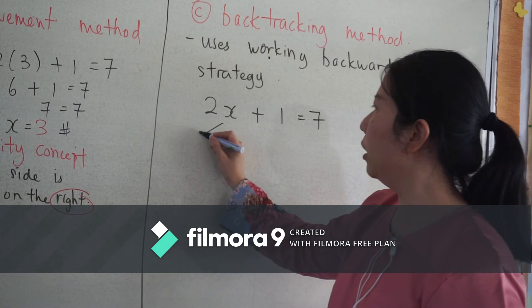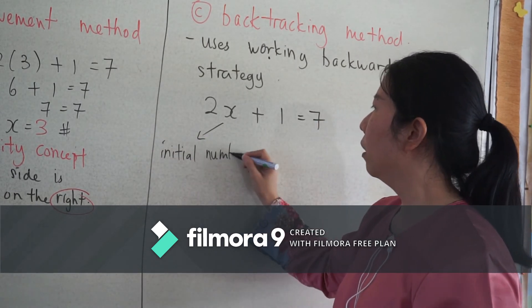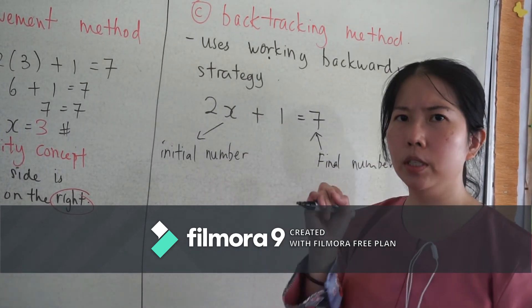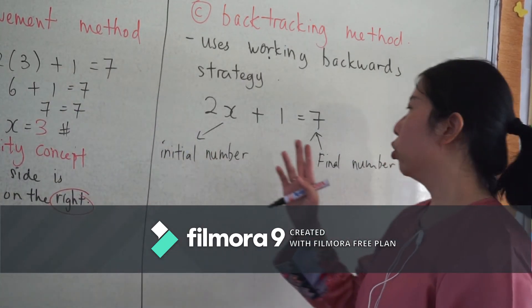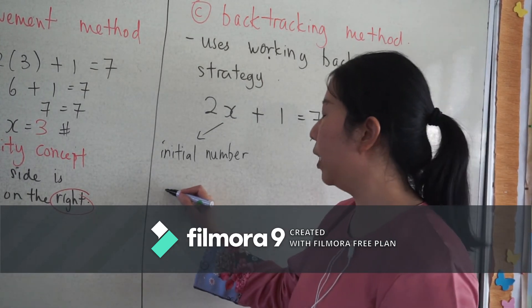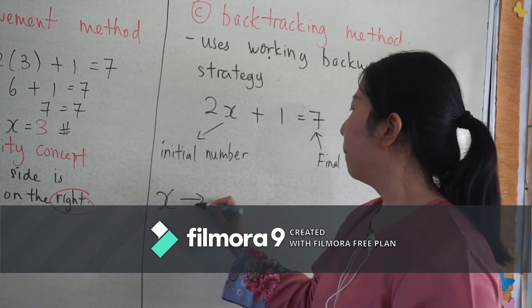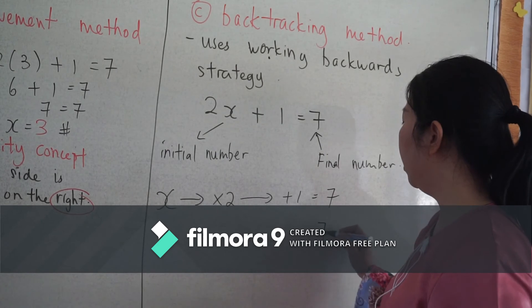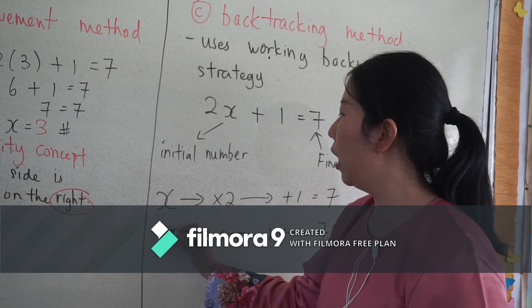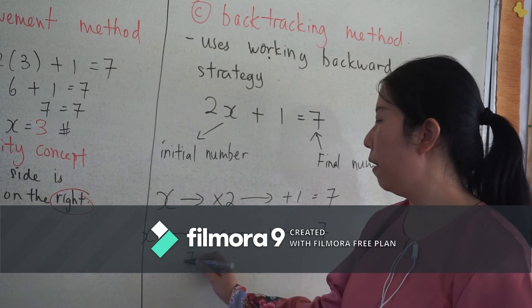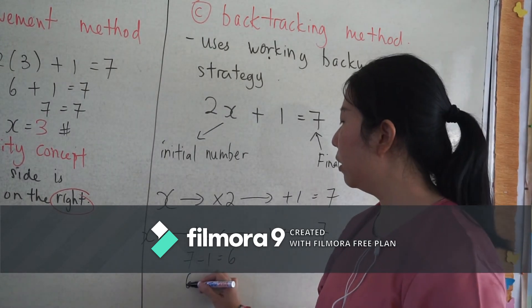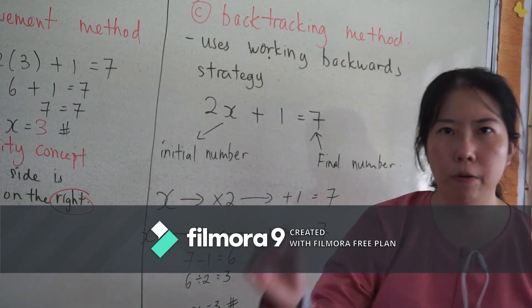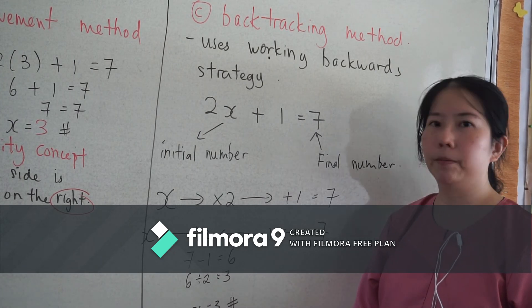For the backtracking method, start with the initial number x. Think forward: x multiplied by two, plus one, gives seven. Then work backwards: seven minus one is six, then six divided by two gives three — so x equals three. State your answer: x is equal to three.